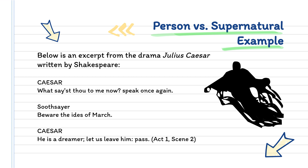Then we have person versus supernatural. Here's a short example from the drama Julius Caesar, written by Shakespeare. Caesar says, 'What sayest thou to me? Speak once again.' And the soothsayer — a fortune teller of sorts — says, 'Beware the Ides of March.' And Caesar says, 'He's a dreamer. Let us leave him. Pass.' The soothsayer is telling the future and warning Caesar that something bad will happen on March 15th. It turns out that's the day Caesar will fall to his demise. We have a little bit of supernatural playing here because the future is being told — that's not something that happens on a day-to-day basis.